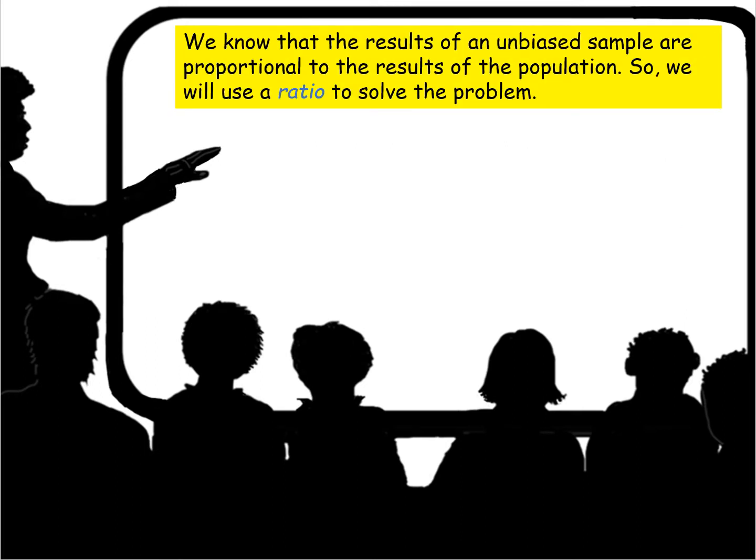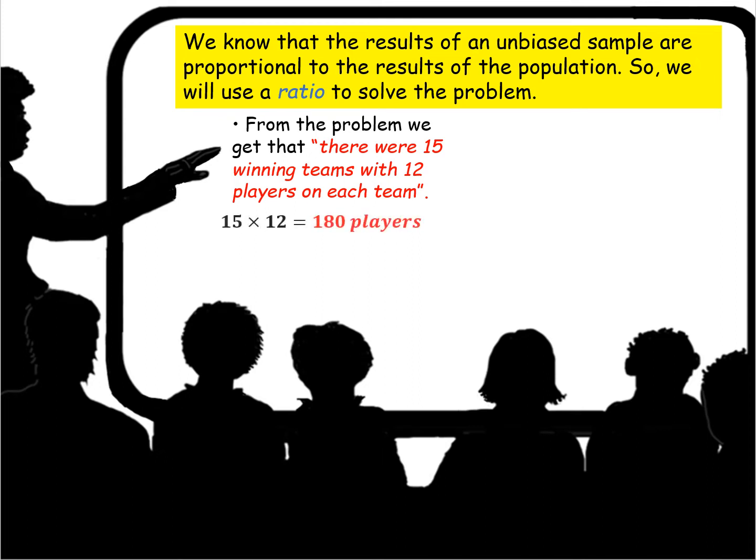Well, we know that the results of an unbiased sample are proportional to the results of the population, and what that means is that we can use a ratio to solve the problem. From the problem we get that there were 15 winning teams with 12 players on each team. So we had 180 total players.